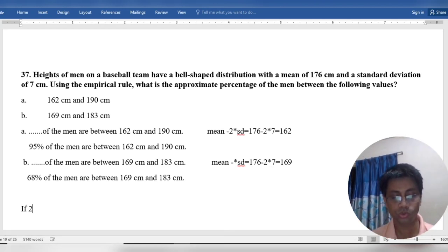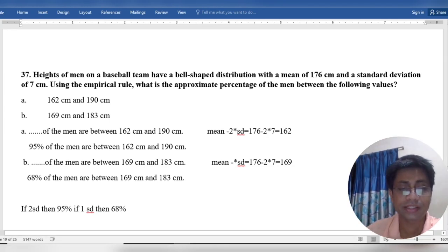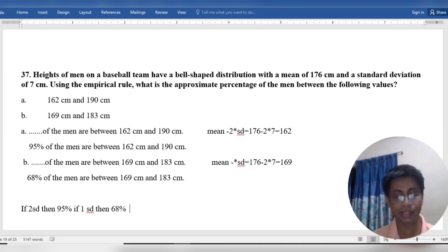If two standard deviations then 95 percent. If one standard deviation then 68 percent. This is the rule. If three standard deviations then 99 percent.